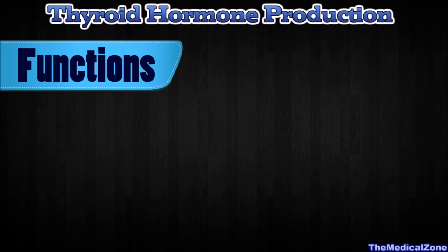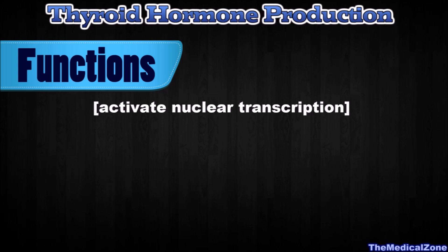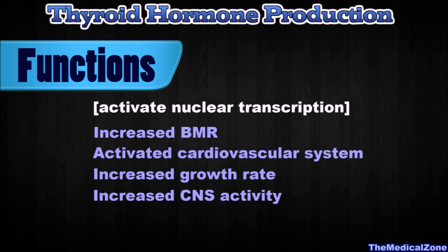The general effect of thyroid hormone is to activate nuclear transcription of large numbers of genes, thereby causing a higher basic metabolic rate, mainly through induction of increased protein synthesis. The net result is a generalized increase in functional activity throughout the body, seen for example in the cardiovascular system, growth rate, and the central nervous system. Without thyroxine and triiodothyronine, almost all the chemical reactions of the body would become sluggish, and the person would become sluggish as well.